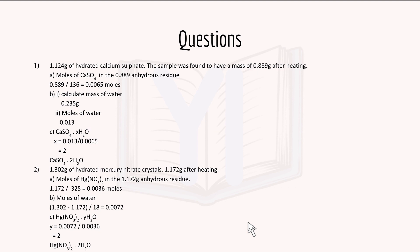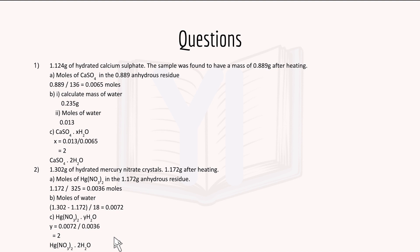Finally, some practice questions on water of crystallization. You're given the mass, calculate the moles, and find x. You find that x equals 2, so the ratio of CuSO4 to H2O is 1 to 2 in moles, giving CuSO4·2H2O. For hydrated mercury nitrate crystals, similar calculations give a ratio of 1 to 2, so the formula is Hg(NO3)2·2H2O. If you don't understand the water of crystallization calculations, check out my previous video on chemical calculations.